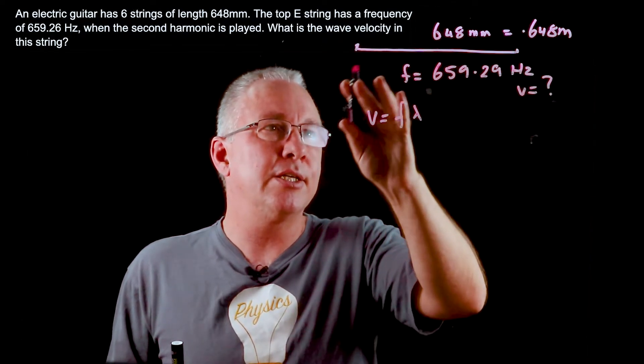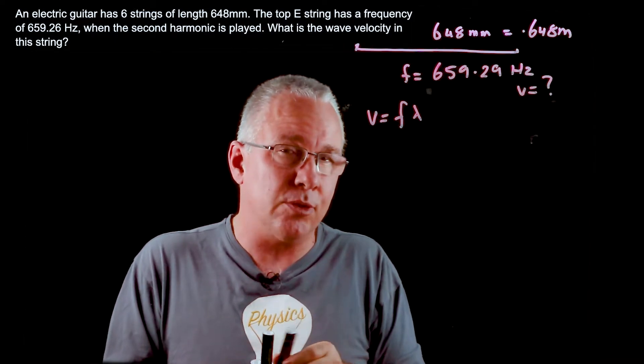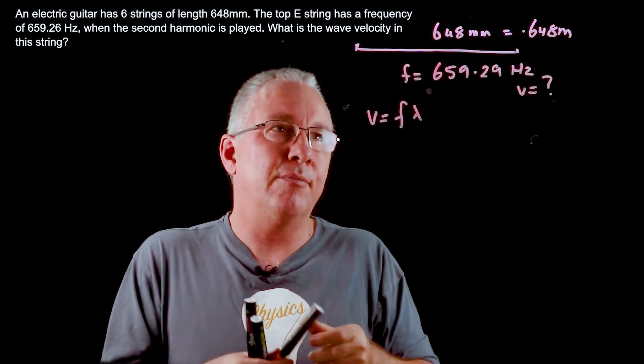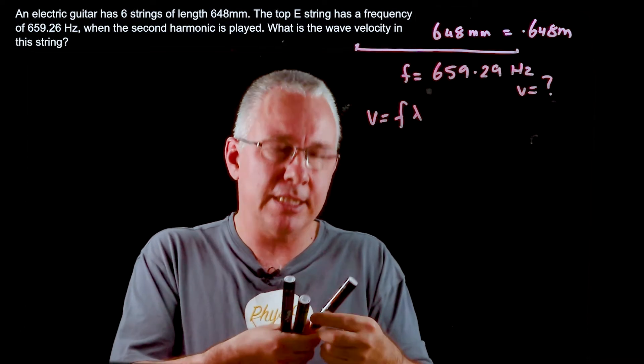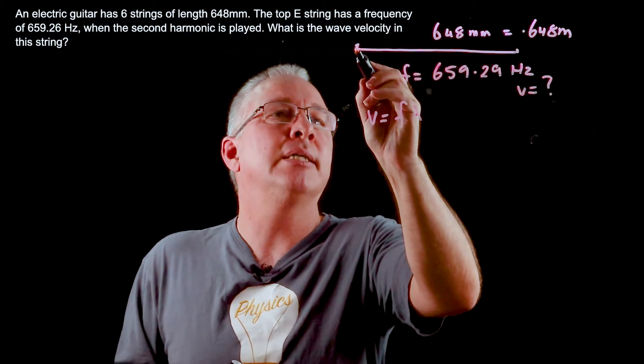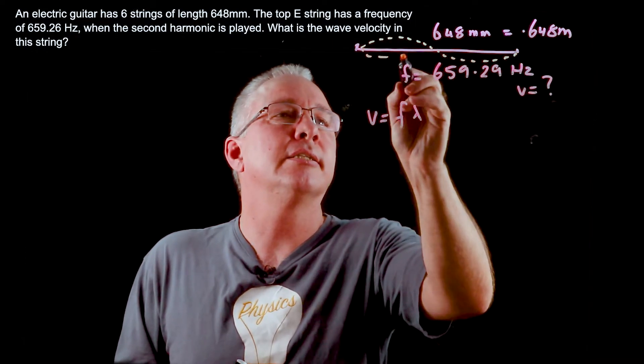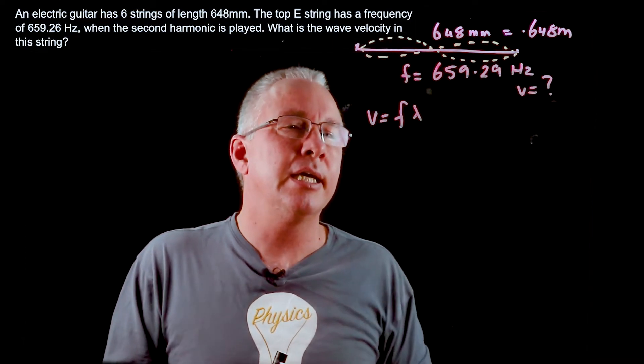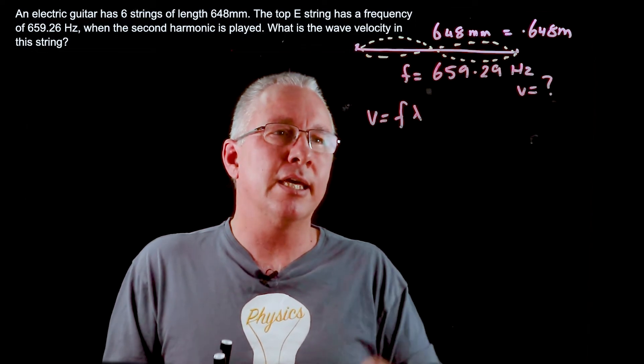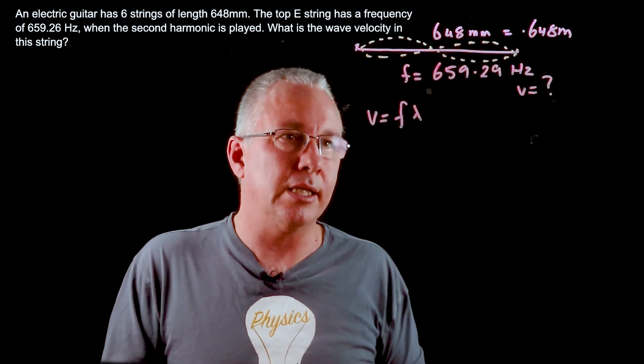This is going to be a standing wave in a fundamental aspect, but we have this second harmonic. So because it's a second harmonic, my standing wave is going to be like so. You can see in this case our wavelength is actually equal to L.